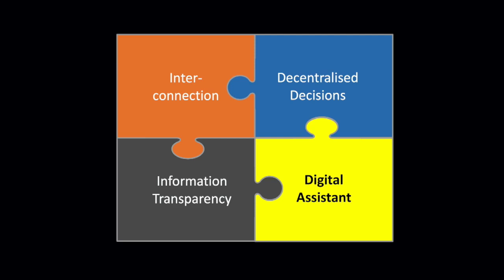interconnection, decentralized decisions, information transparency, and digital assistance. These four things coming together simultaneously — and that's the big thing — made up the design principles for Industry 4.0. Let me unpack these quickly.